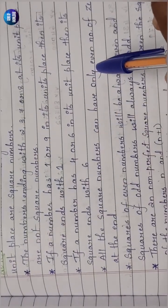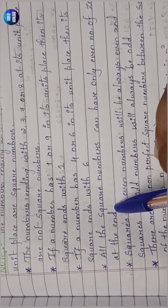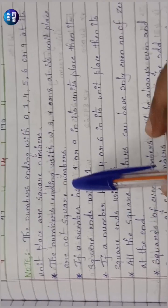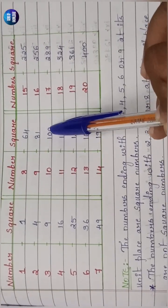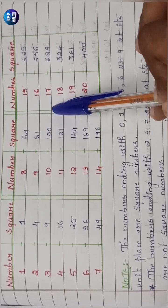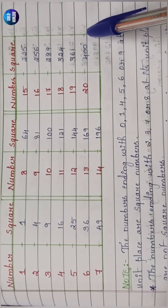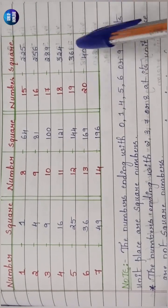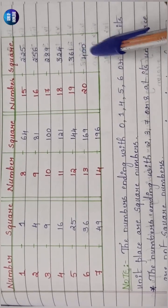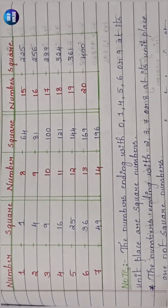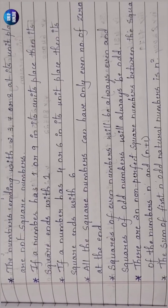All square numbers can have only an even number of zeros at the end. For example, 10²=100 has two zeros — an even number. 20² gives two zeros as well. If a number has an even count of trailing zeros, it can be a perfect square; otherwise it cannot.